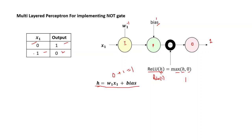Now let's take the second case where the value of X1 is one. When your value of X1 is one, W1 times X1 will be minus one. Then you add the bias, which is plus one, and your hidden layer component will be zero. Then you pass it through the activation function — that is ReLU of zero — which will be equals to maximum of zero and zero, which is equals to zero. This is in accordance with what we have seen should be your intended output.